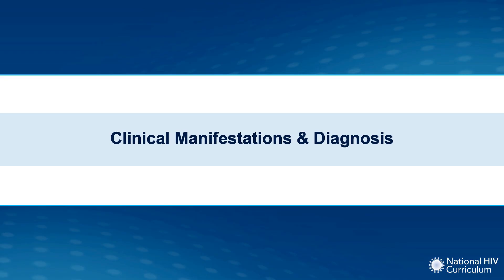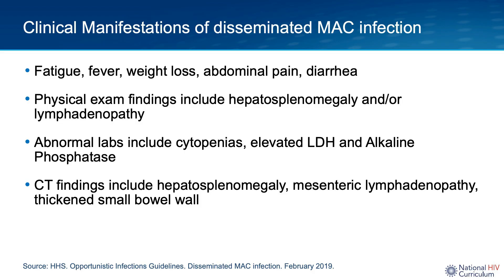For people living with HIV with a CD4 count less than 50 who are not on ART, MAC disease presents as a disseminated multi-organ infection. Symptoms may include fever, night sweats, weight loss, fatigue, diarrhea, and abdominal pain. Physical exam findings include hepatomegaly, splenomegaly, or lymphadenopathy. Lab derangements include cytopenias, especially anemia, and sometimes even pancytopenia because MAC can invade the bone marrow. Elevated lactate dehydrogenase (LDH) and/or elevated alkaline phosphatase levels may also be seen.